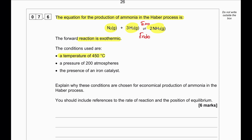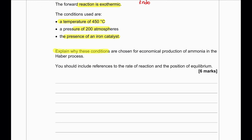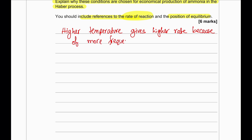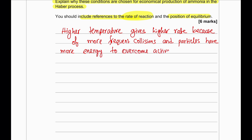The conditions used are 450°C, 200 atm, and iron as a catalyst. Explain why these conditions are chosen for economical production of ammonia, with reference to rate of reaction and position of equilibrium. Higher temperature gives a higher rate of reaction because more particles have energy greater than the activation energy. Higher pressure gives a higher rate because particles are closer together, giving more frequent collisions. A catalyst gives a higher rate because the activation energy is lowered.